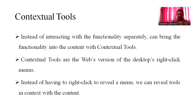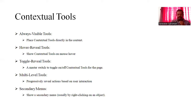Contextual tools are the web version of the desktop right-click menus. Instead of having to right-click to reveal a menu, we reveal the tool in context with the content. The following is a list of tools most useful for contextual making: the always visible tool, the hover reveal tool, the toggle reveal tool — a master switch to toggle contextual tools on or off for the page — and the multi-level tool, which progressively reveals actions based on user interactions.